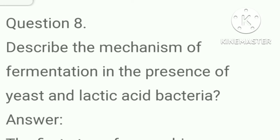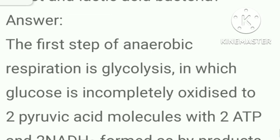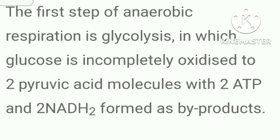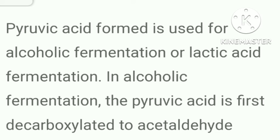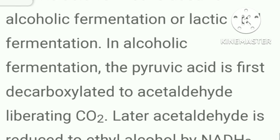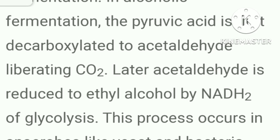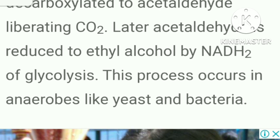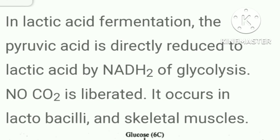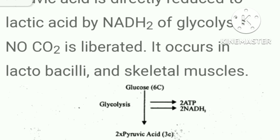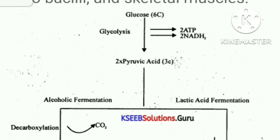Describe the mechanism of fermentation in the presence of yeast and lactic acid bacteria. The first step of anaerobic respiration is glycolysis, in which glucose is incompletely oxidized to two pyruvic acid molecules with two ATP and two NADH₂ formed as byproducts. In alcoholic fermentation, pyruvic acid is first decarboxylated to acetaldehyde liberating CO₂; then acetaldehyde is reduced to ethyl alcohol by NADH₂ of glycolysis — this occurs in anaerobes like yeast and bacteria. In lactic acid fermentation, pyruvic acid is directly reduced to lactic acid by NADH₂ of glycolysis; no CO₂ is liberated; it occurs in lactobacilli and skeletal muscles.